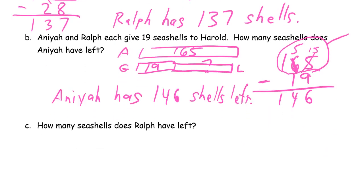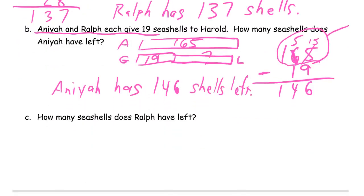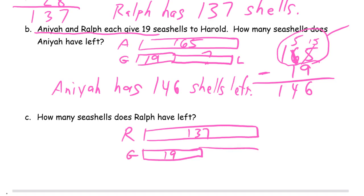How many seashells does Ralph have left? Well, Anea and Ralph both gave 19 to Harold. So what did Ralph have? Ralph had 137, right, from part A. And he's also giving away 19. And that's what he's giving away because they both gave away 19. And this is what he has left. We don't know that. So it's 137 minus the 19.